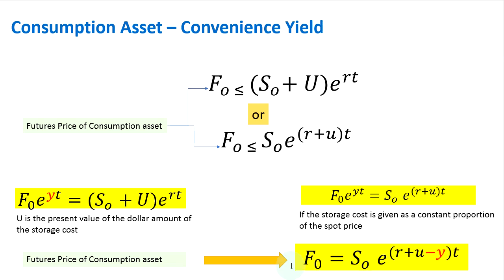We are deducting the convenience yield when calculating the futures price of a consumption asset. The futures price of a consumption asset equals the spot price multiplied by the exponent of the risk-free interest rate plus the storage cost given as a percentage, minus the convenience yield, all multiplied by time to maturity. When you consider a futures price, you lose the benefit of holding the asset now, and that benefit given as a yield is deducted.